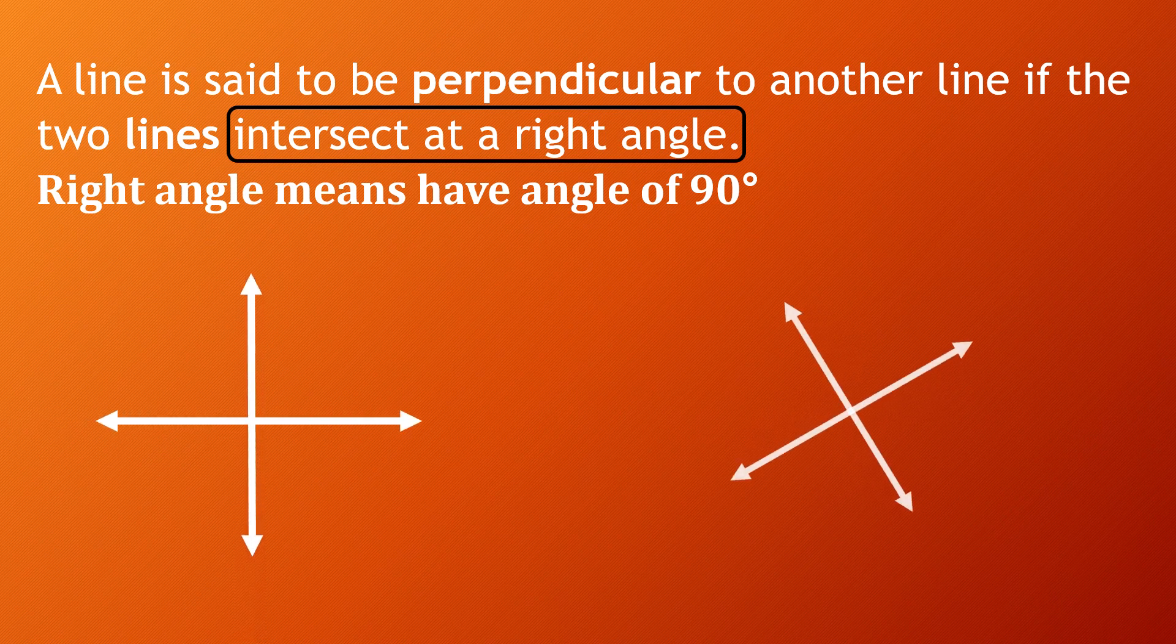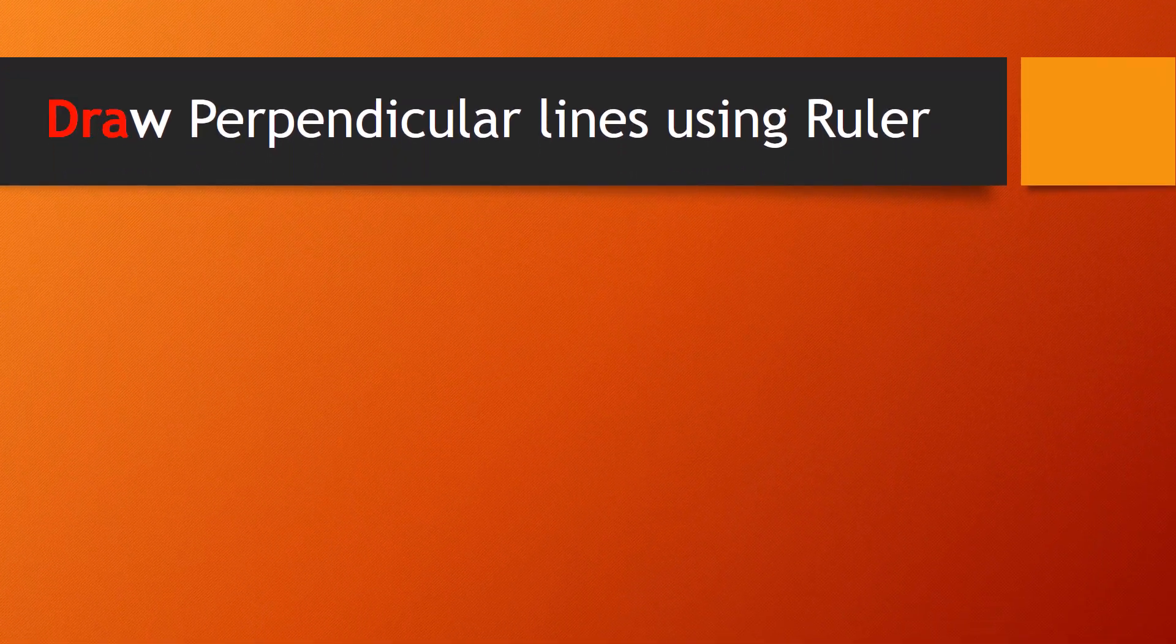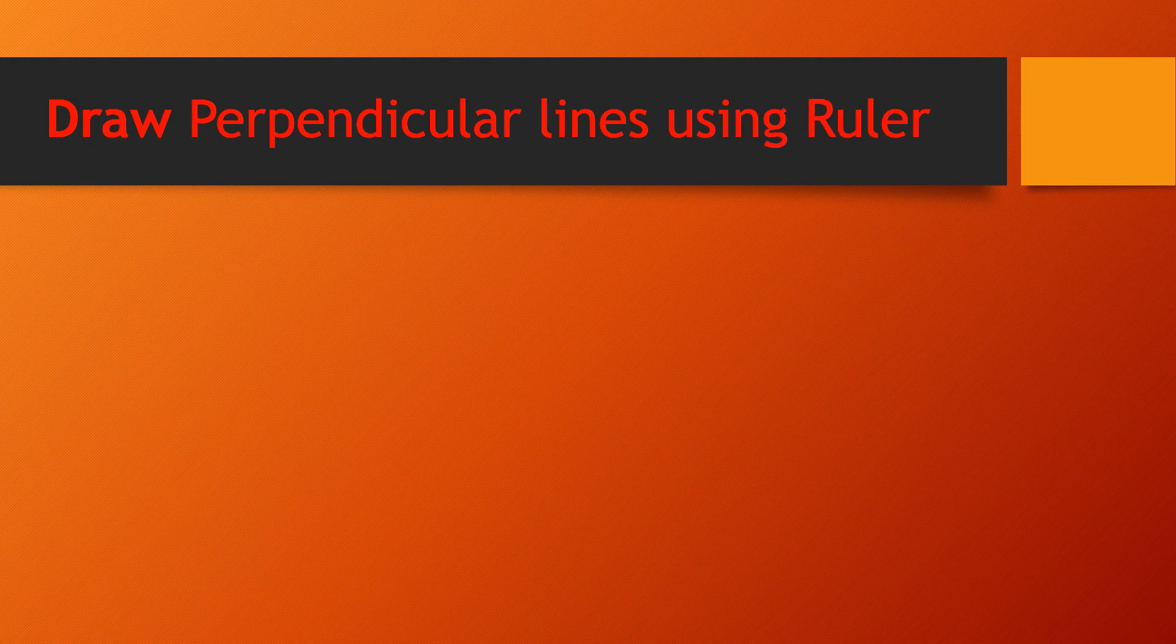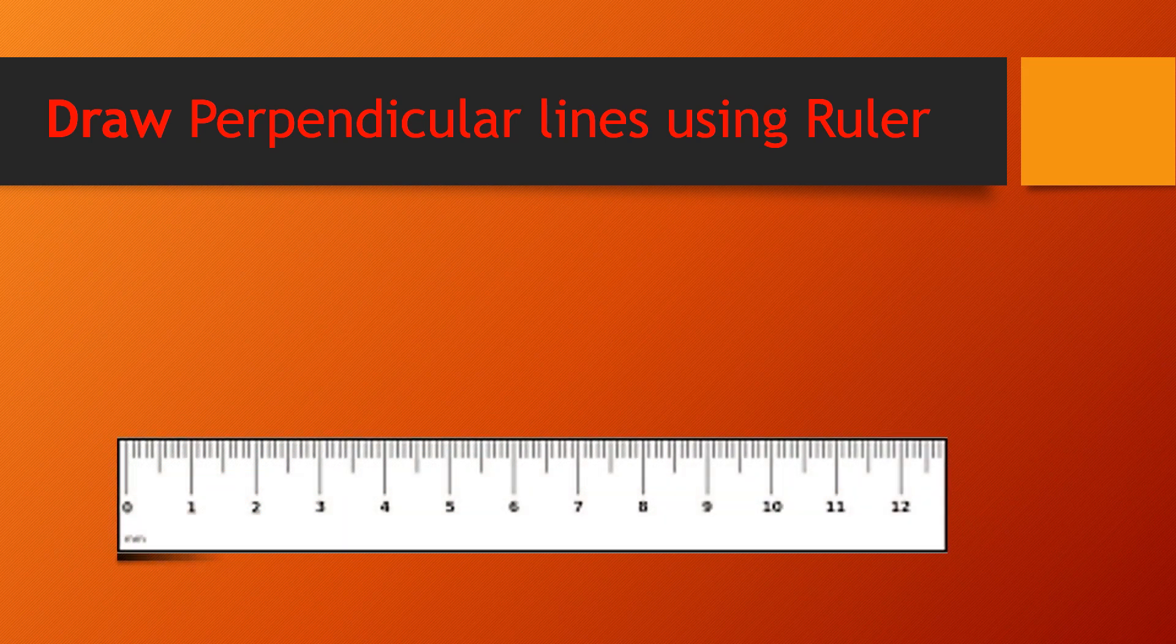Right angle means having an angle of 90 degrees. You can draw perpendicular lines using ruler. First put your scale, draw a line like this, and then you can draw another line using the other side of that ruler.